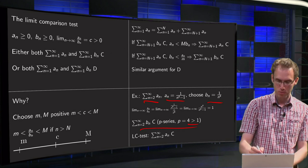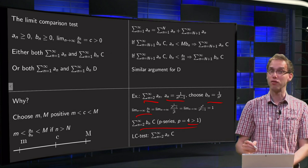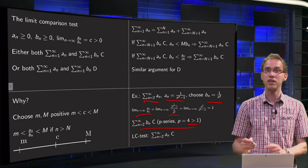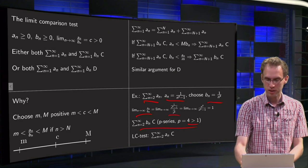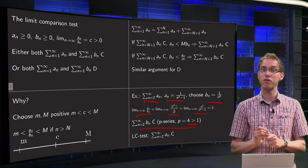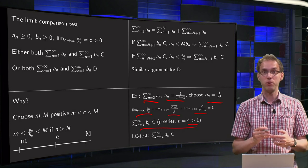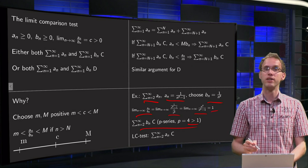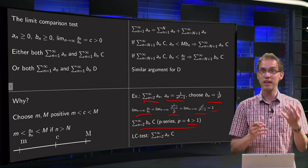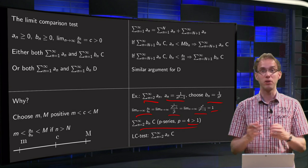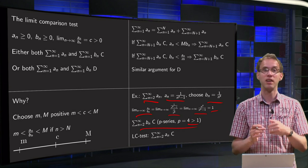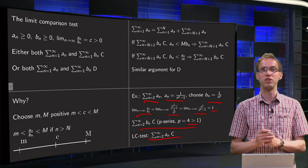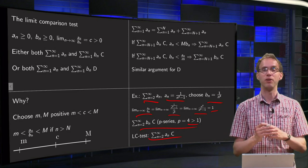Now we only need to compute the limit as n tends to infinity of a_n over b_n. Here we have a_n over b_n — simplifying, we get n to the power 4 divided by n to the power 4 minus 1. Dividing by the highest power, we end up with 1. So c equals 1, which is neither 0 nor infinity. That means we can apply the limit comparison test: the sum of b_n converges, so the sum of a_n converges as well, and we are done.